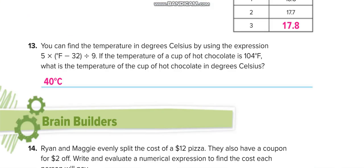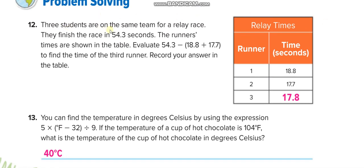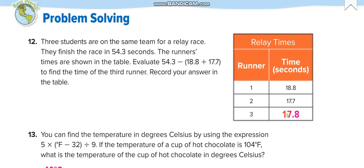On the next page: three students are on the same team. Evaluate this expression: 54.3 minus 18.8 plus 17.7. To find the value, solve this expression and you will find the answer.